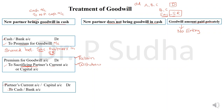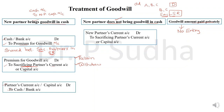When the new partner does not bring goodwill in the form of cash, the first entry for cash does not apply. Instead, the entry is: new partner's current account debit to sacrificing partners' current account or capital account. Since the new partner is not bringing cash, we change the premium for goodwill to new partner's current account because the amount is due. This amount will be shared between the sacrificing partners in the sacrificing ratio.